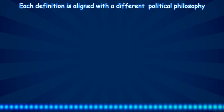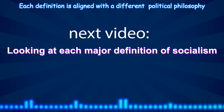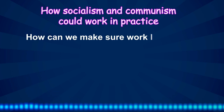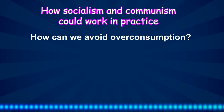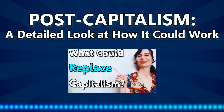And there are other types of socialists I haven't even mentioned, so yeah, it gets a bit complicated. I'd like to go over each major definition of socialism in detail, but I don't want to make this video too long. So if you want to dive into this complicated mess with me, join me next time in the next video, which will come out next week. In the meantime, I have another video you might like about how both a socialist system and a communist system could work in practice — how can we make sure the work that needs doing gets done, how can we avoid overconsumption, how can goods be produced and distributed with no market, no central planning, no state planning, and even no money? I discuss all of this in my video, Post Capitalism: A Detailed Look at How It Could Work, which you can find linked in the video description.